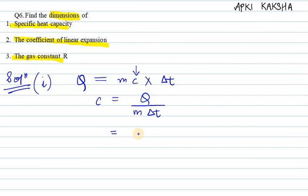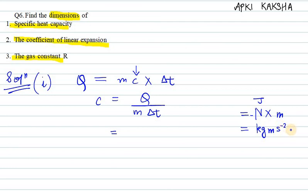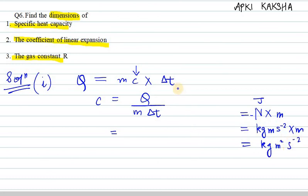Q is the heat energy and the unit of heat is joule. Joule can be expressed as newton times meter, and newton can be expressed as kg·m·s⁻². So that means we have kg·m²·s⁻², and therefore the dimension of Q will be M¹L²T⁻².